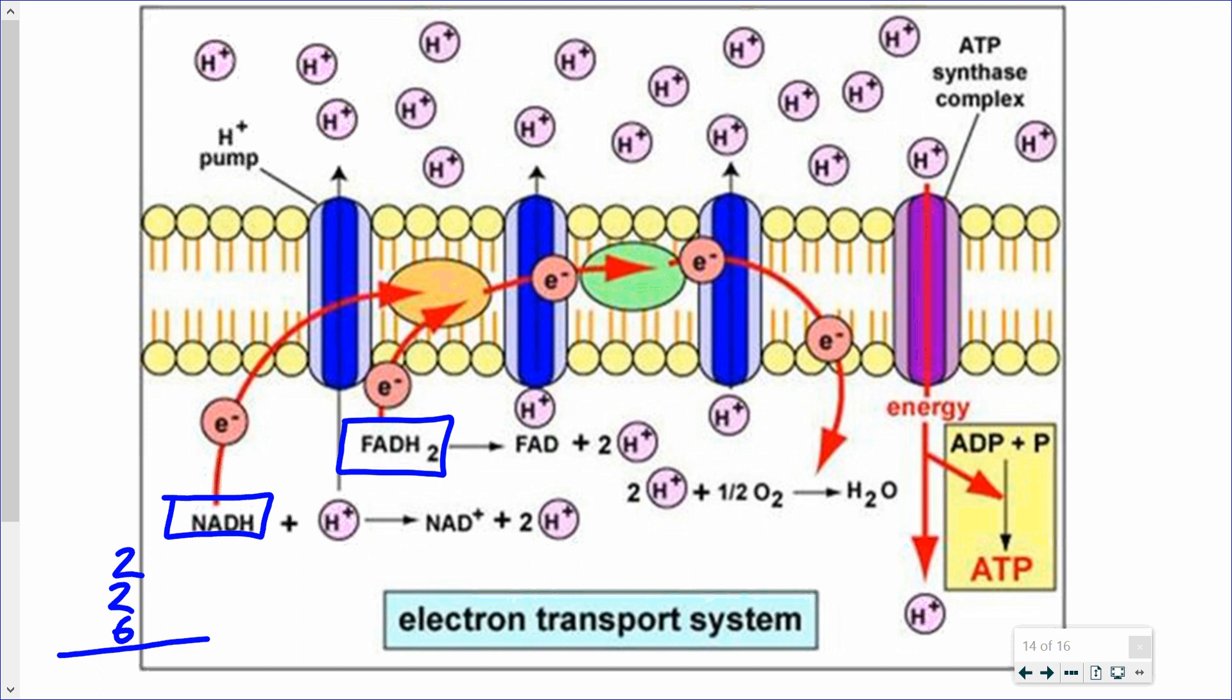So using glycolysis, the intermediate step and the Krebs cycle, we have a total of 10 NADHs, which can now be used for the process of oxidative phosphorylation. FADH, not quite as many of those, one for each turn of the Krebs cycle. So we have two FADHs that can now contribute to the further production of ATP.